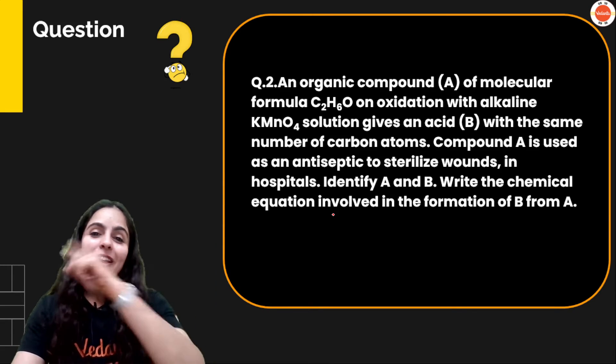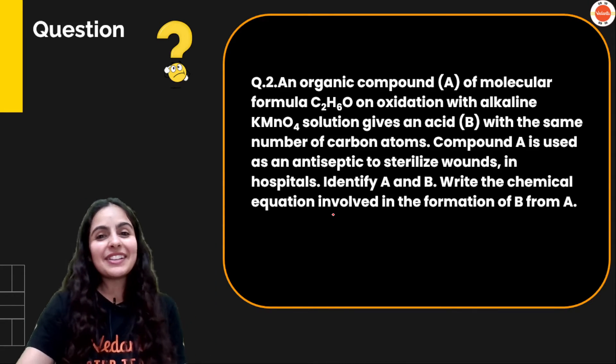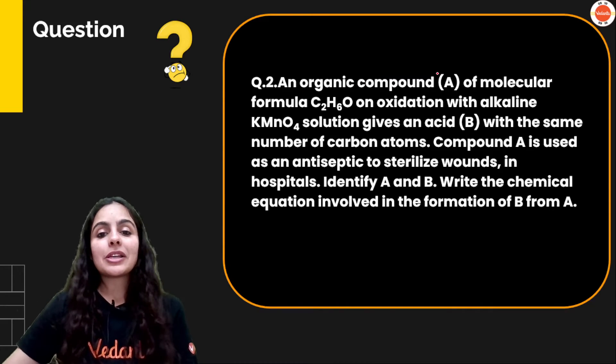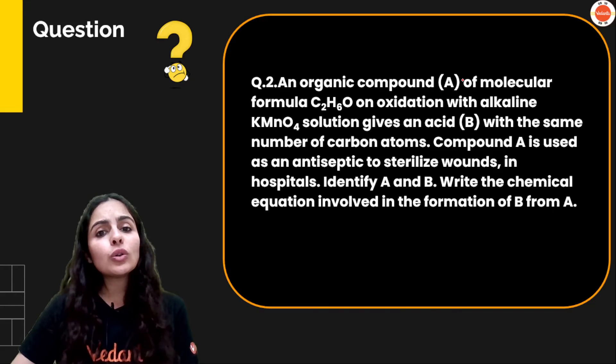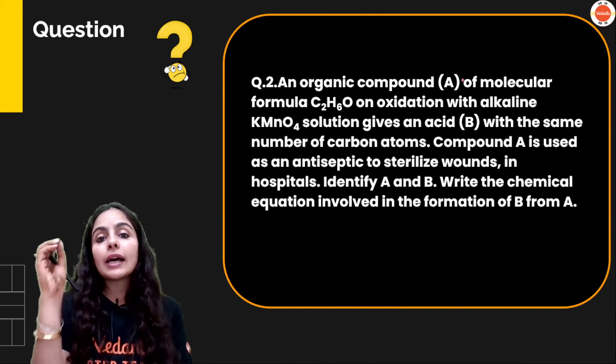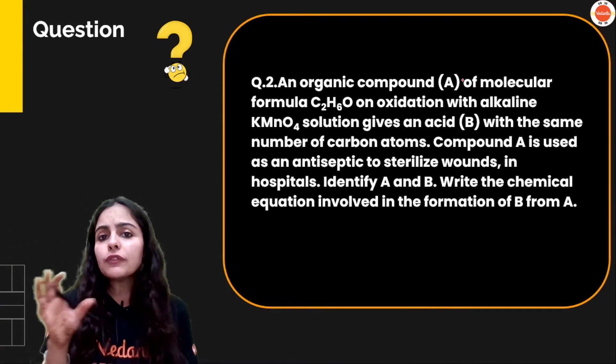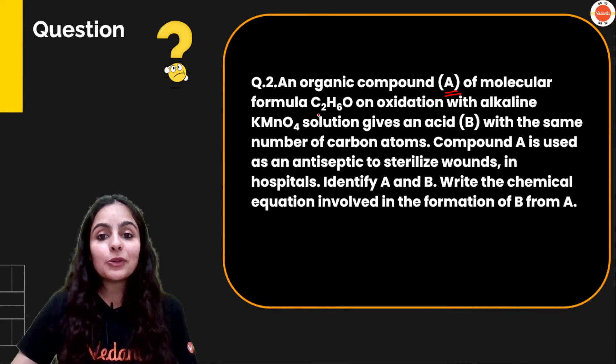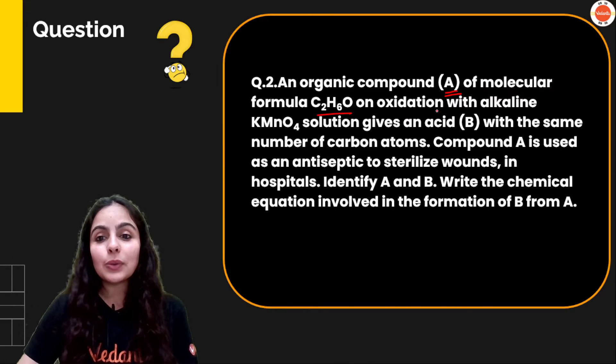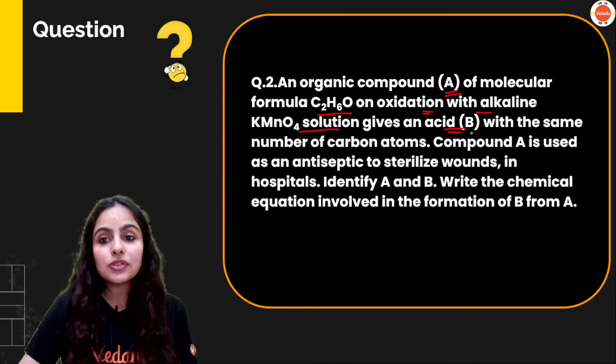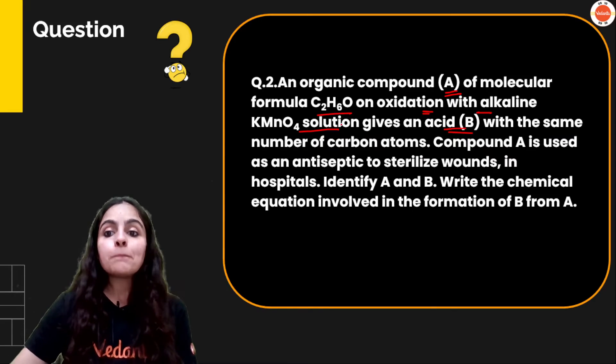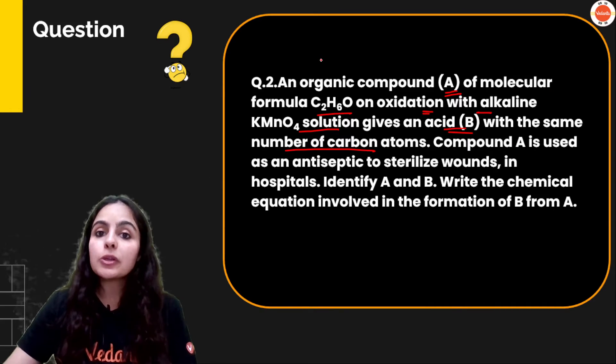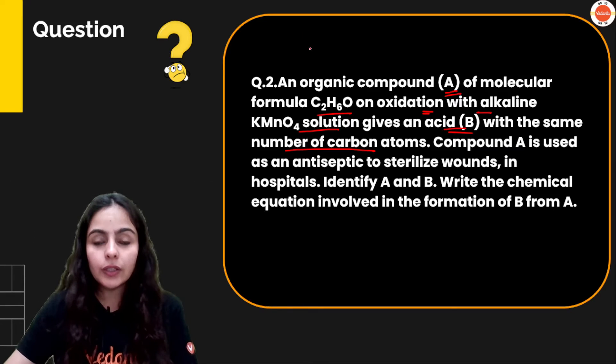All right guys, moving on to our next question. Second question is again a very simple one. Just follow kar. Line by line padate jao or jitna information aap gather kar pare wo leke jao ek taraf. An organic compound A with molecular formula C2H6O, on oxidation with alkaline KMnO4 solution gives an acid B with the same number of carbon atoms.